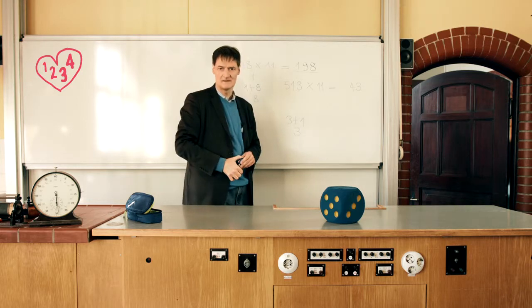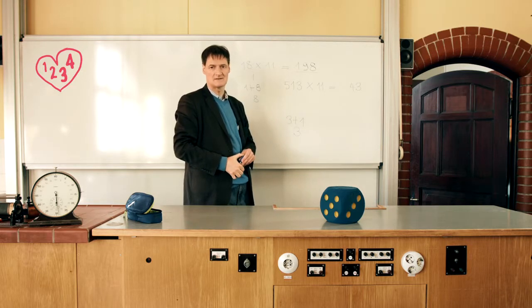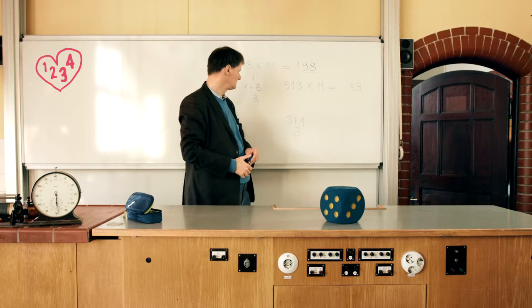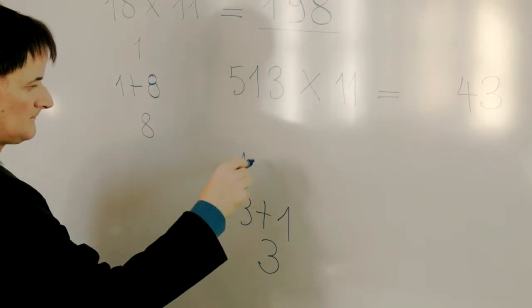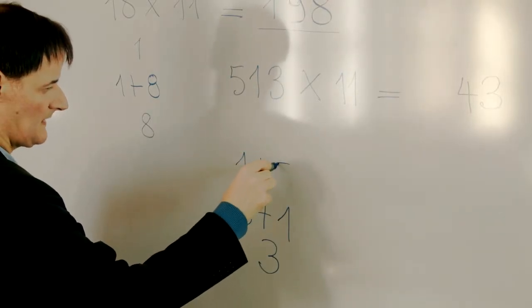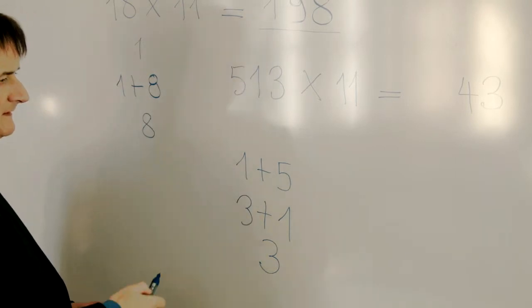Then the first digit plus the second one. 1 plus 5 equals 6.